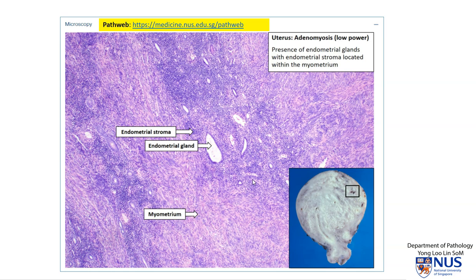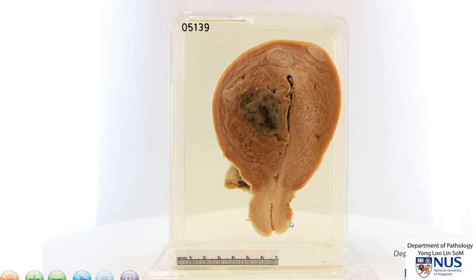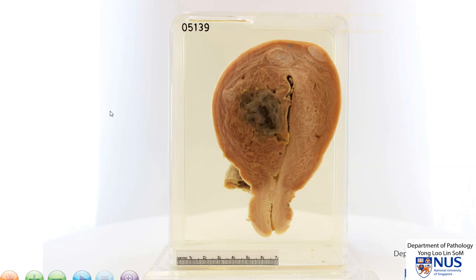This is a benign process and usually can be managed with medical treatment. In summary, this is a specimen of a longitudinally bisected uterus where the myometrium is thickened and trabeculated, with areas of hemorrhage including small punctate hemorrhages and focal larger areas. There are also a few small, well-circumscribed ovoid nodules in the myometrium, which represent small fibroids or leiomyomata.